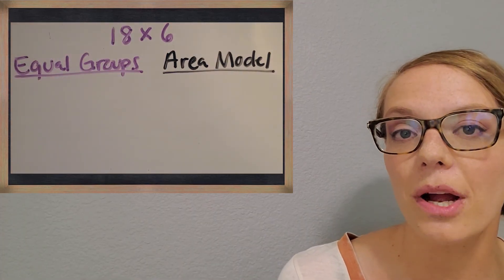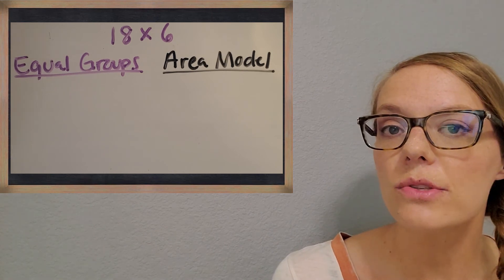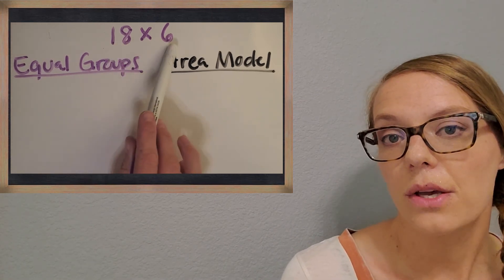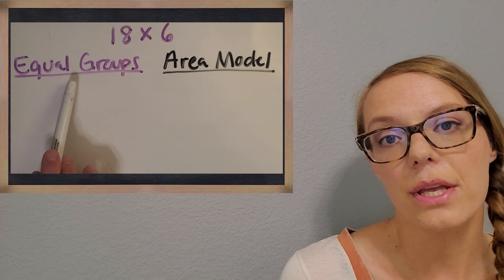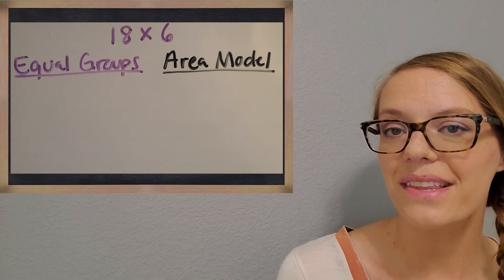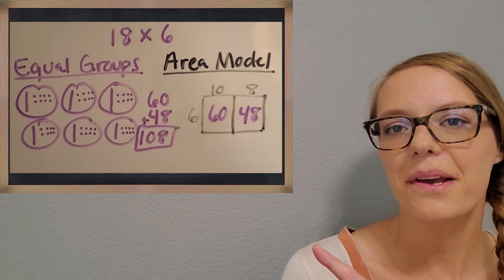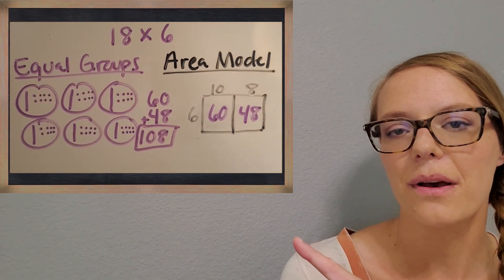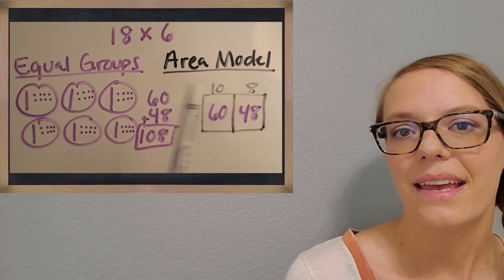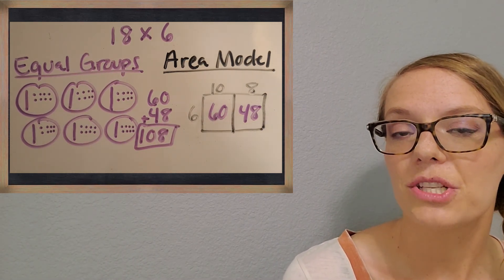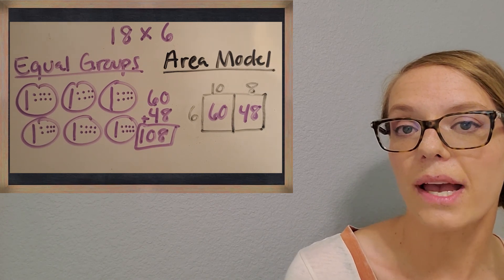All right, so here's one more problem. And I want you to choose which of those strategies you like the best. So pick one, pick either equal groups or area model. See if you can find the answer. And then we'll come back and check your work. All right, here you go. Here's my work on both strategies. And see what you think. Which one did you pick? And did everything work out just like mine? Great work today, everyone. I hope this helps you in your math class or at home. And I hope you enjoy. Have a great day. Bye.